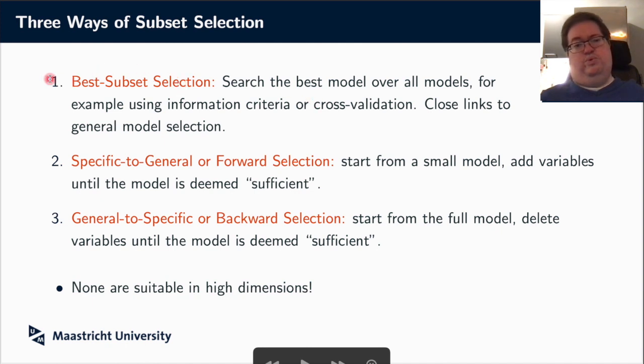Now, we can roughly discern three ways of subset selection or variable selection. The first one is, I think, the most common one, which is so-called best subset selection, which is essentially you search over all possible models, and you have some criterion to decide on what is the best. And you basically choose, according to your criterion, the best model over all models. This is a general way we do model selection. In particular, one thing we use, for instance, is information criteria. Another thing that you do is cross-validation.